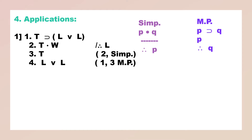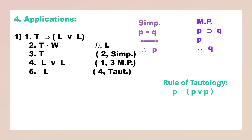From lines 1 and 3, M.T. Now you can apply the rule of Tautology to get L. Both ways you can apply this rule — if the left side is given you can replace it by the right, and if the right side is given you can replace it by the left. So we have arrived at L, which is the conclusion.